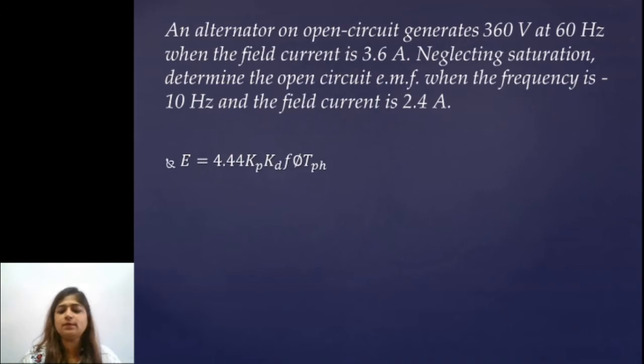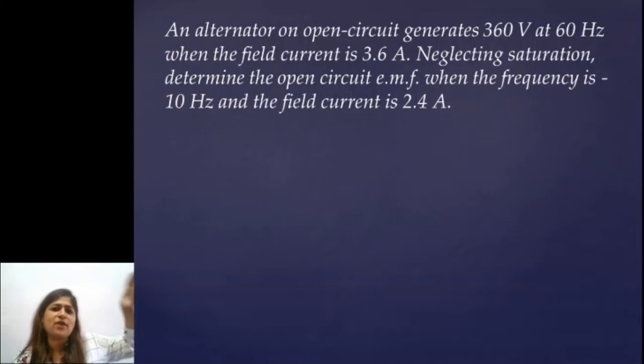We'll quickly take another problem. An alternator on open circuit generates 360 V at 60 Hz when the field current is 3.6 A. Neglecting saturation, determine the open circuit EMF when the frequency is 10 Hz and the field current is 2.4 A. This is something very different which is given. The data which is given is very different than what we were considering till now. Let's try to analyze what exactly is given to you.